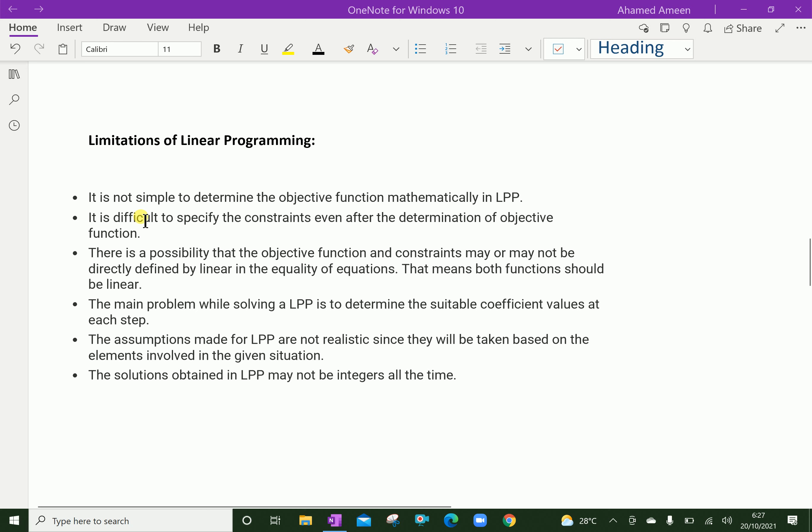It is not simple to determine the objective function mathematically in LPP. It is difficult to specify the constraints even after the determination of the objective function. There is possibility that the objective function and constraints may or may not be directly defined by linear in the equality of equations. That means both functions should be linear.